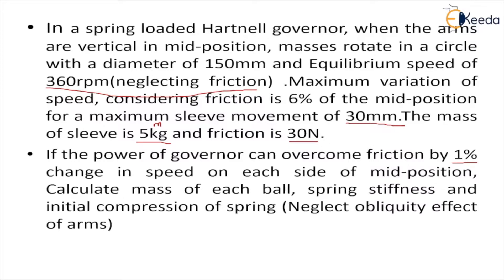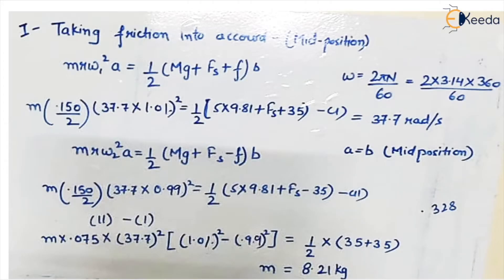Now when they say they can overcome friction by 1% on each side means at both the extreme positions - extreme maximum speed position and minimum speed position. So 1% means in one case we will be using 1.01 and in other case it will become 0.99 because 1% change is plus minus 1. When they say 1%, that means plus minus 1% of whatever is the original speed. In extreme condition when speed increases, it increases by 1%, and when it decreases, it decreases by 1%. Similarly, when we talk about 6% change, in extreme condition it is 1.06 and in other condition we subtract 6%, so it is also plus minus 6%.